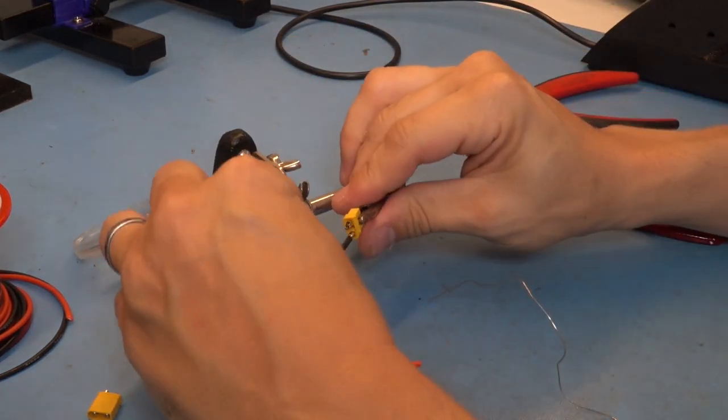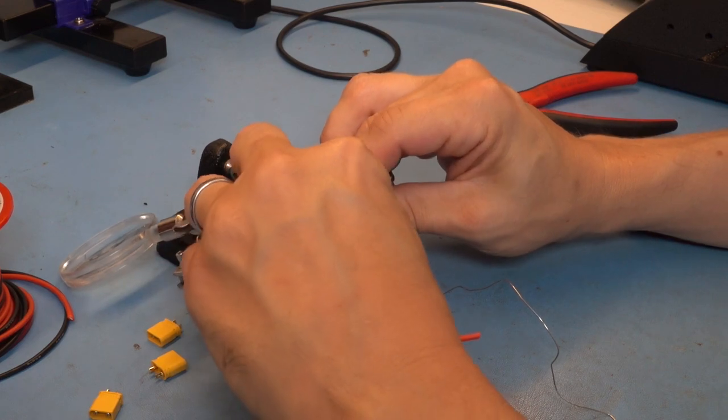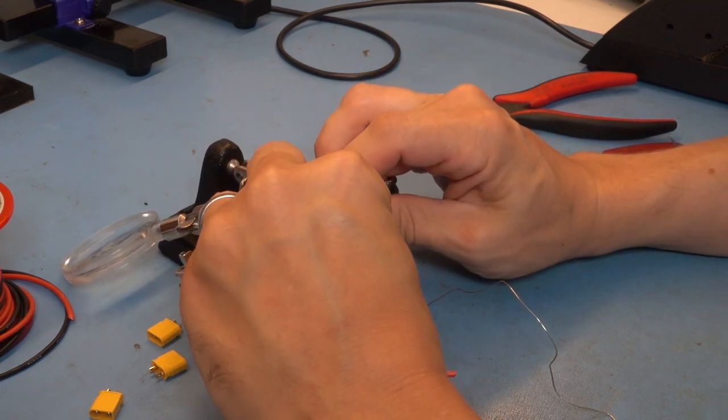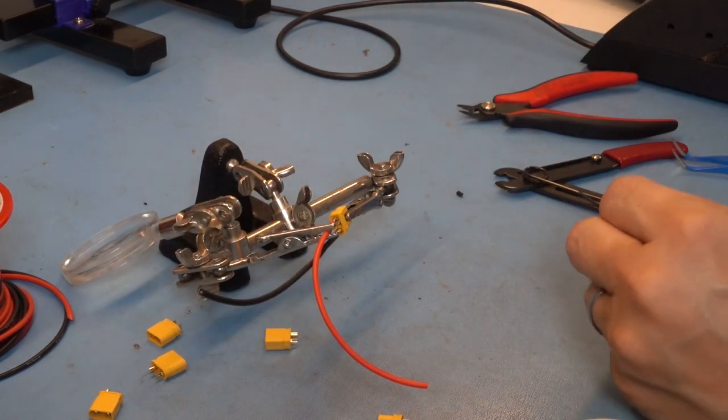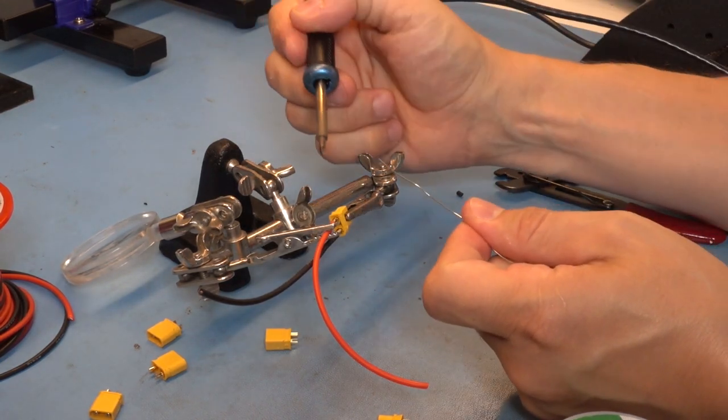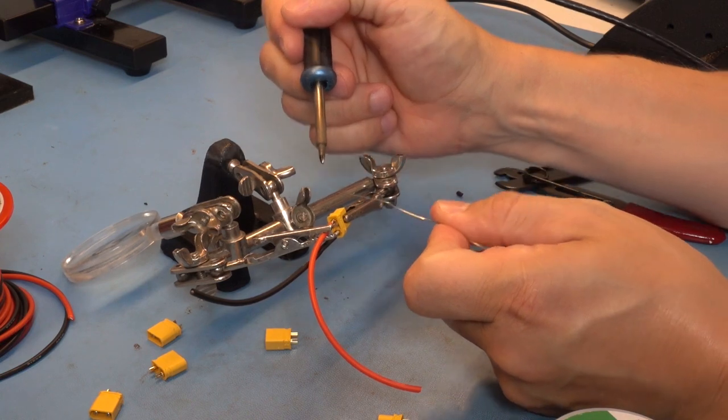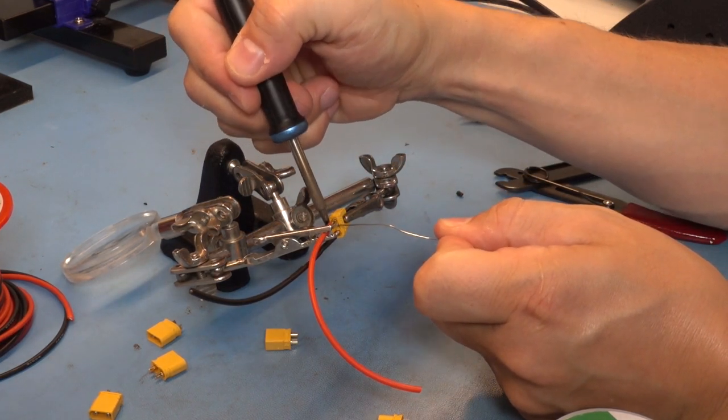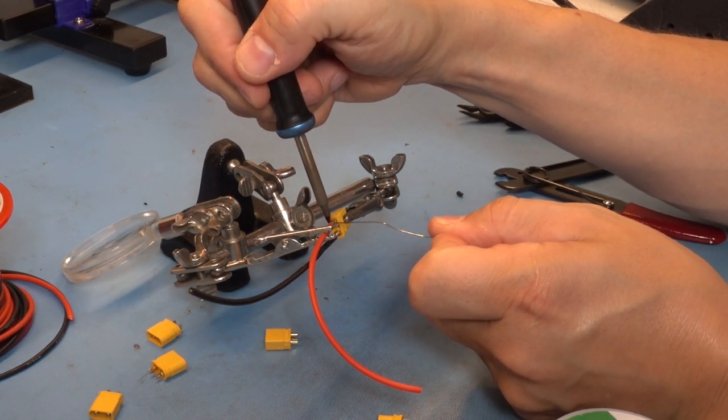We'll do the same operation where we use the helping hands to position the wire into the solder cup. Take our iron, put solder on the tip, touch it to the side, and wait for it to reflow.